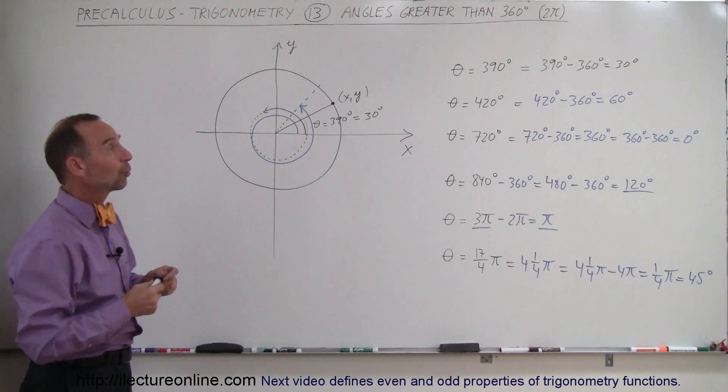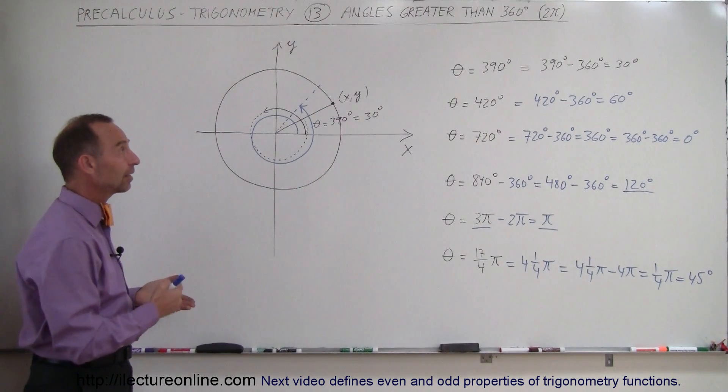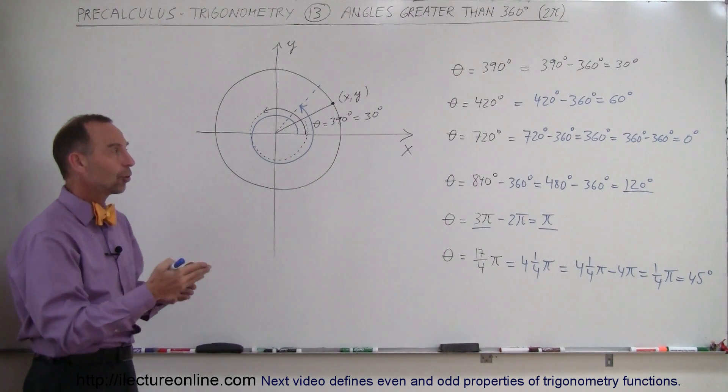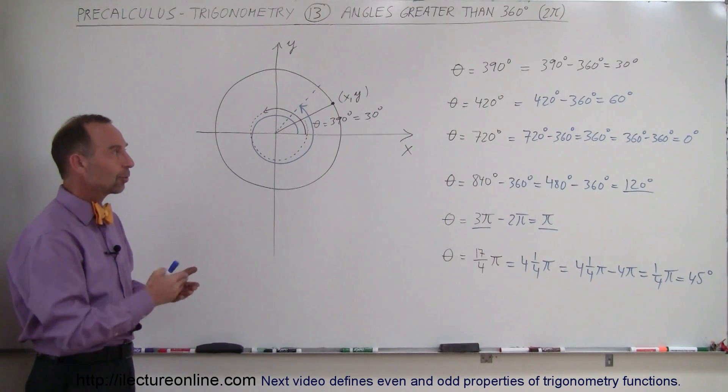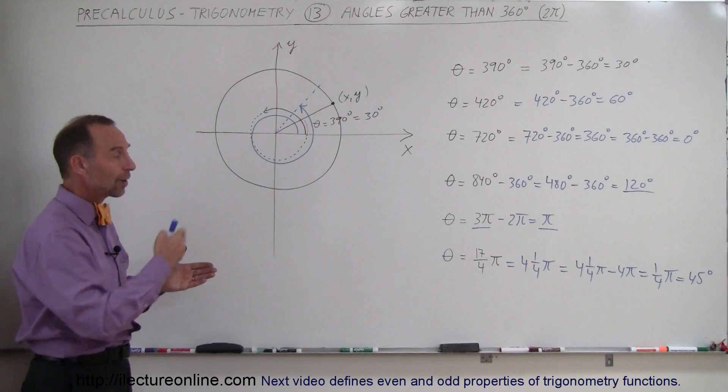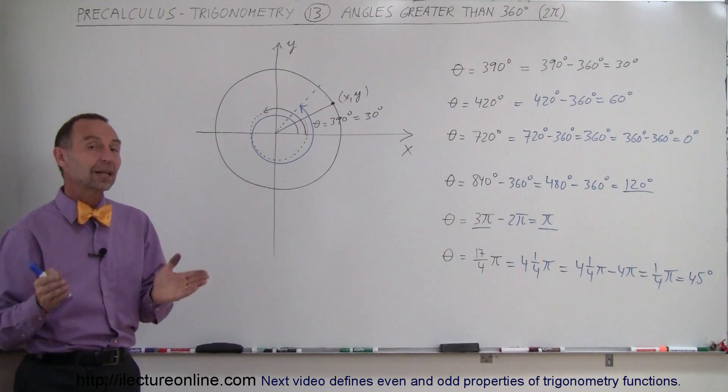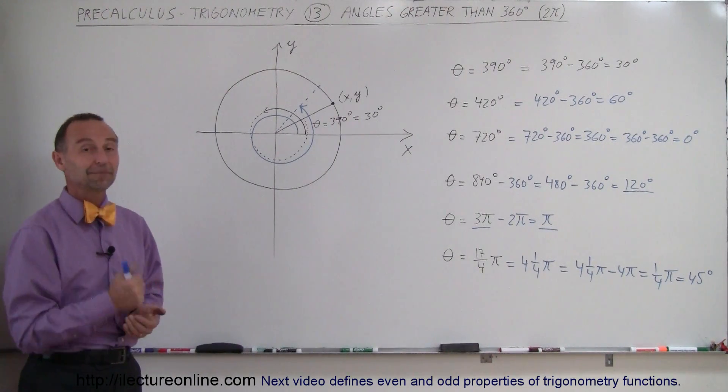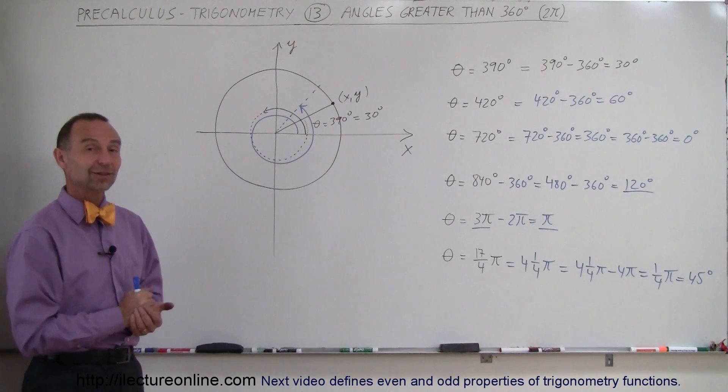If you are given an angle that is greater than 360 degrees or an angle that is greater than 2π, just go ahead and keep subtracting 360 degrees from it until you end up with an angle between 0 and 360, or keep subtracting 2π from it until you get an angle between 0 and 2π, and then you can work with it. And that's what we do with those large angles.